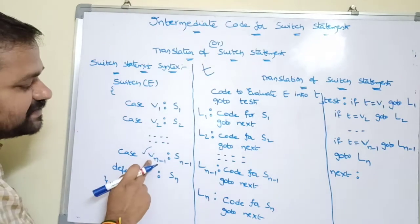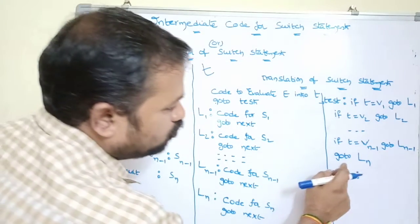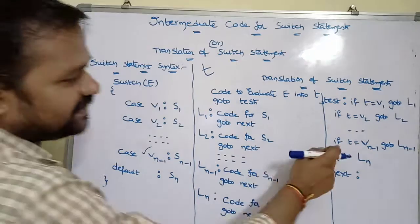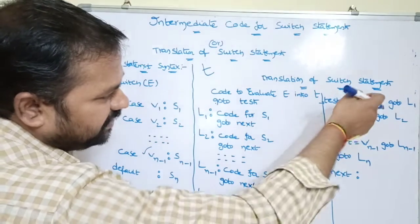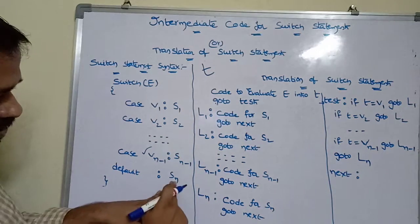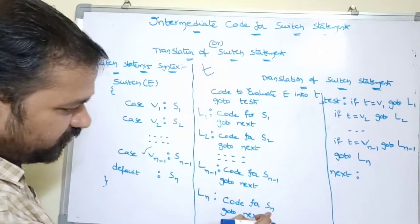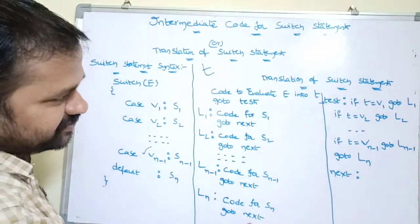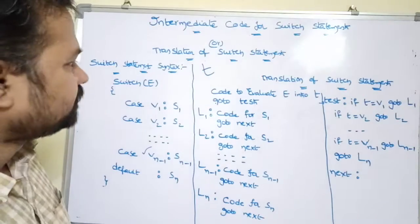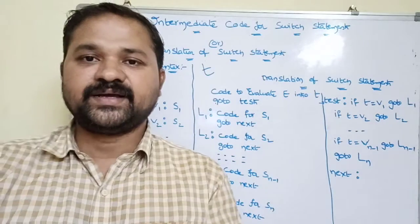If the expression doesn't match any case value — t doesn't match v1, v2, or vn-1 — then the default block sn is executed via 'goto Ln'. At Ln, there is no condition needed; if all previous conditions are false, control falls here. The code for sn is executed, then 'goto next' completes execution. This is how we write intermediate code for the switch statement.